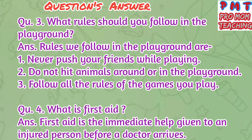Question 3: What rules should you follow in the playground? Answer: Rules we follow in the playground are — First, never push your friends while playing. Second, do not hit animals around or in the playground. Third, follow all the rules of the games you play. Question 4: What is first aid? Answer: First aid is the immediate help given to an injured person before a doctor arrives.